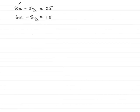Now, in this question, we've got to solve the simultaneous equation 8x minus 5y equals 25 with 6x minus 5y equals 15.